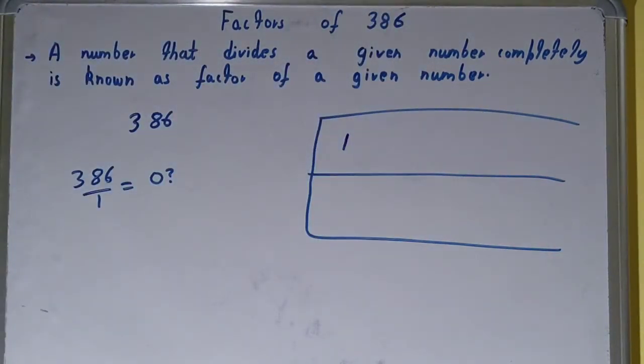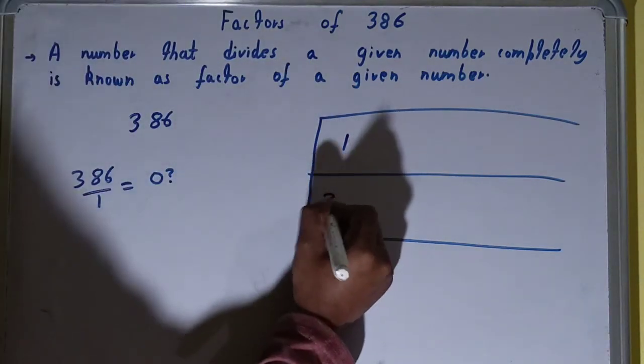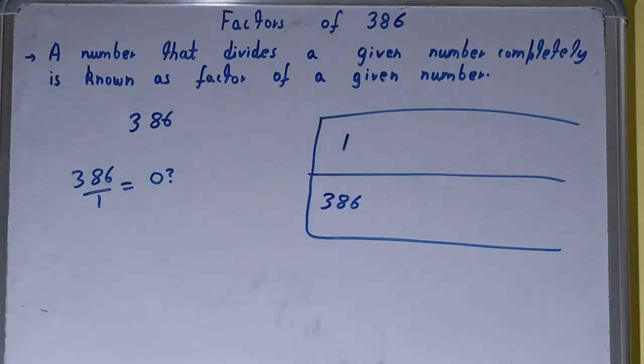And with the help of this 1, we can find out another factor. How? 1 into what times is 386? 1 into 386 times. So 386 will also be the factor automatically.